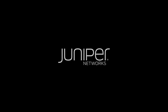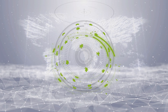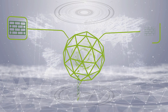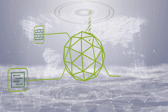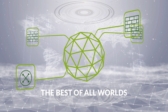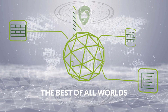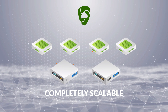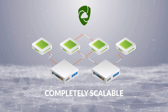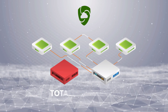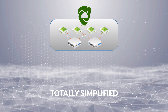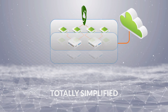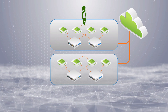Enter Juniper Connected Security Distributed Services Architecture, which uniquely integrates our routing infrastructure, giving you the best of all worlds managed through Juniper Security Director Cloud. You can scale horizontally and elastically as much as you want with no single point of failure. You can simplify operations by managing your security infrastructure as a single unit, no matter how many physical devices you need.